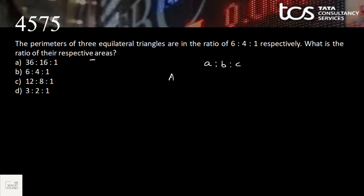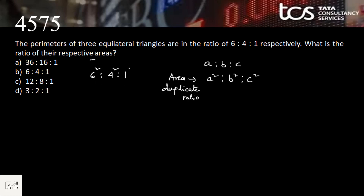The area ratio is a² : b² : c². Here the perimeter ratio is given as 6:4:1, which is the same as the side ratio since all perimeters are divided by 3. Therefore the area ratio is the duplicate ratio of 6:4:1, that is 6² : 4² : 1² = 36 : 16 : 1. Option A is the answer.